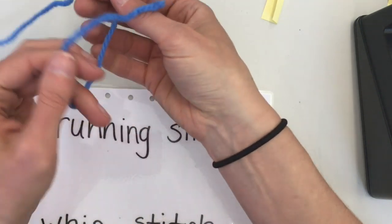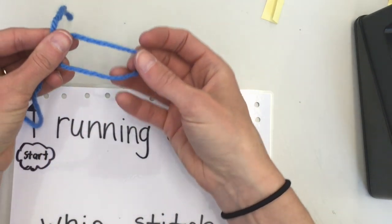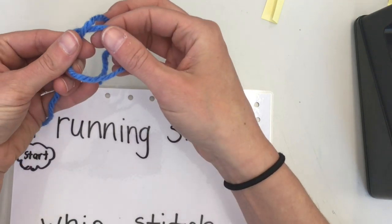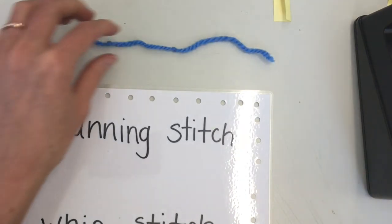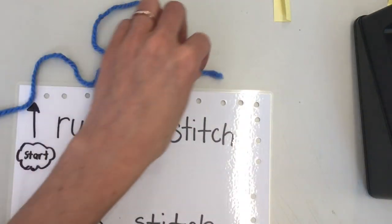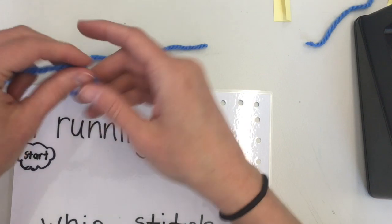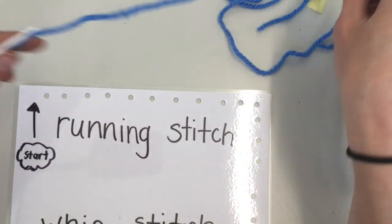So make a loop, pull the string through the hole, and then pull upwards to tighten the knot. So now your needle and yarn are secure on both ends.